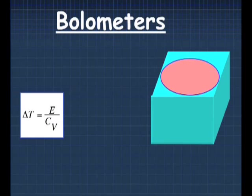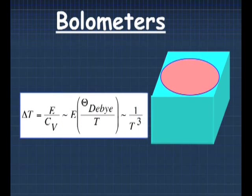A microcalorimeter is a purely thermal device. The temperature rise is given by delta T, and what we need is to read out this system using a thermometer, which is provided by the transition edge sensor.